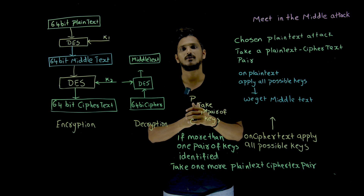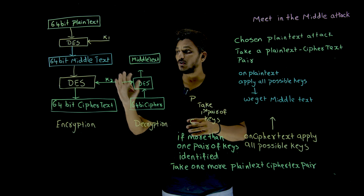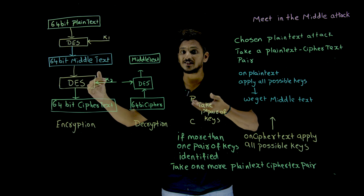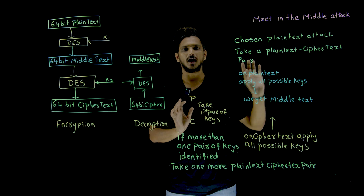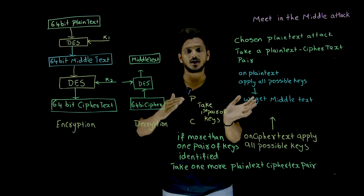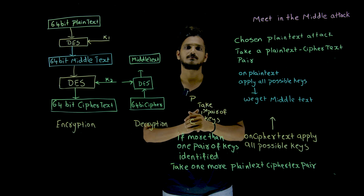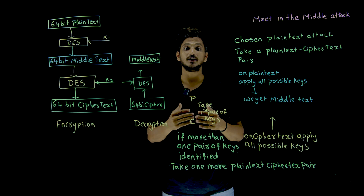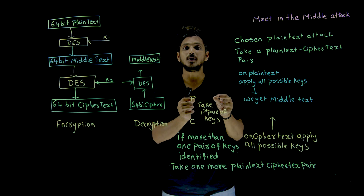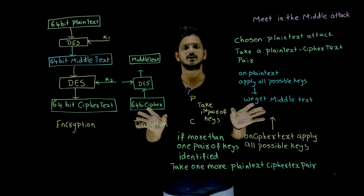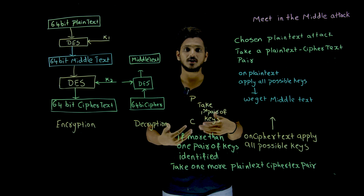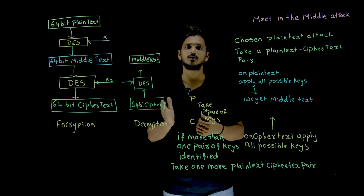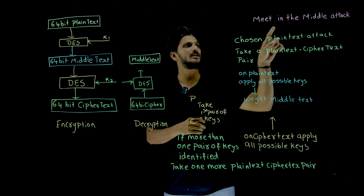This is how the meet in the middle attack works. Even though double DES improved the key space from 2 power 56 to 2 power 112, the meet in the middle attack reduces the effective possibilities to 2 power 57. That is why they implemented triple DES. In our next class we will discuss triple DES — what it is and how many variants there are.